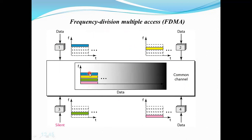All the individual frequency bands are separated by small guard bands — you can see this to avoid station interference. Between the frequency bands, a small guard band is inserted to prevent station interference. The blue frequency band is allocated to station one, yellow is allocated to station two, green is allocated to station three, and pink is allocated to station four.